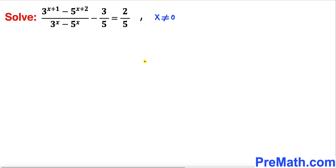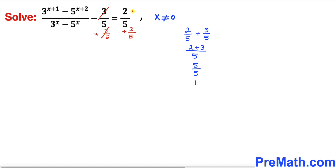So let's go ahead and get started with the solution. The very first thing we are going to do is add 3/5 on both sides. We can see this negative 3/5 and positive 3/5 cancel out, and on the right hand side if we add these two fractions, it simplifies to simply 1.